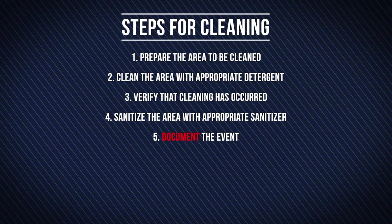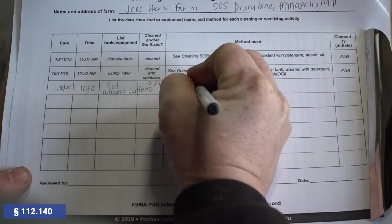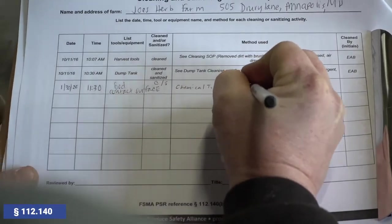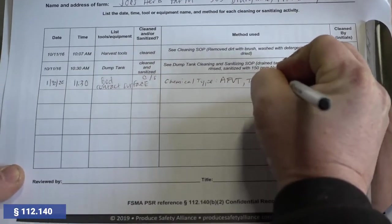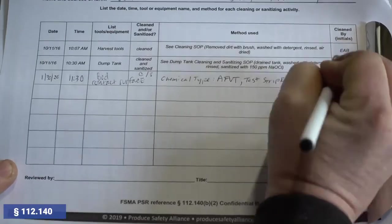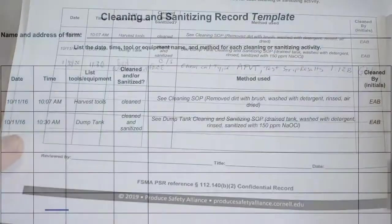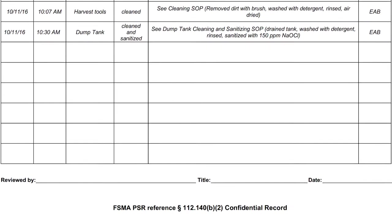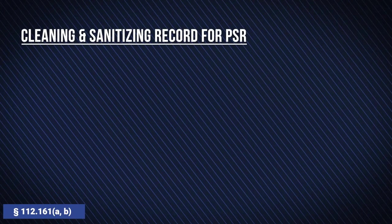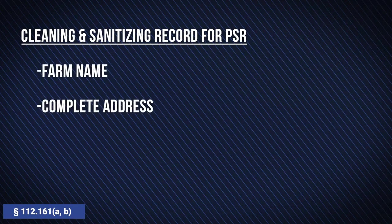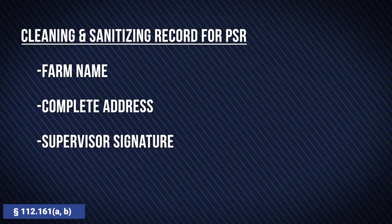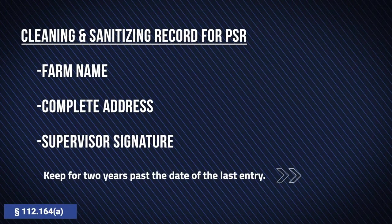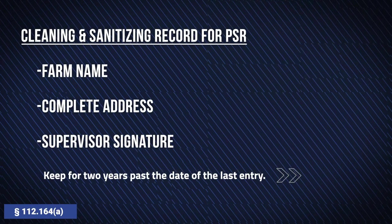Establish a record for each cleaning and sanitizing event that includes the date of the event and the method you use to clean and sanitize. Templates of these records are available here. The cleaning and sanitizing record for the Produce Safety Rule must include farm name, complete address, and must be signed and dated by a supervisor. Keep these records for two years past the date of the last entry.